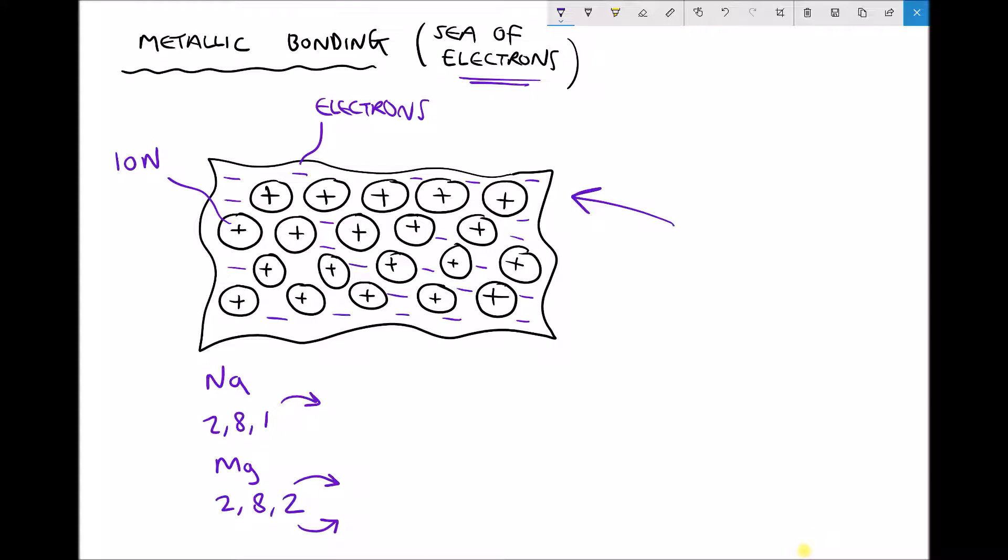Providing they're still surrounded by the sea of electrons, they won't break free from the piece of material. We might strike the material on the right hand side and knock all of those ions along. But providing those ions are still within the lattice and the material doesn't fracture, then the material hasn't failed.